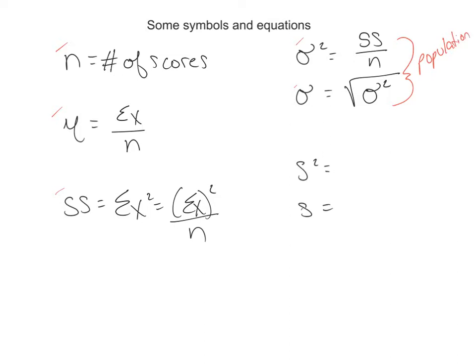Next, variance for a sample. So variance for a sample is sum of squares divided by n minus 1. And n minus 1, we call that, at this point, degrees of freedom. So degrees of freedom is n minus 1.